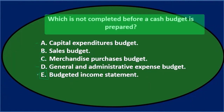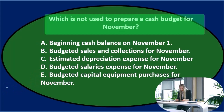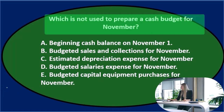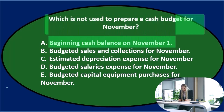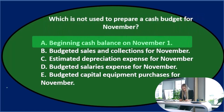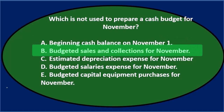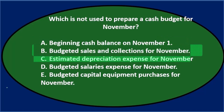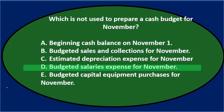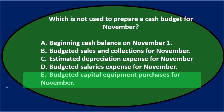Which is not completed before a cash budget is prepared — E, budgeted income statement. Next question: which is NOT used to prepare a cash budget for November? Options are: A — beginning cash balance on November 1st, B — budgeted sales and collections for November, C — estimated depreciation expense for November, D — budgeted salaries expense for November, and E — budgeted capital equipment purchases for November. Let's go through this with process of elimination.